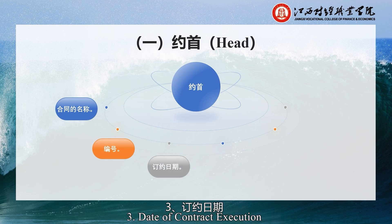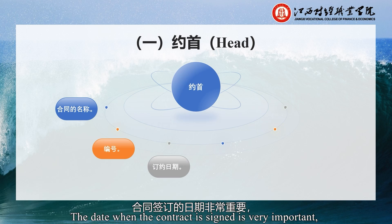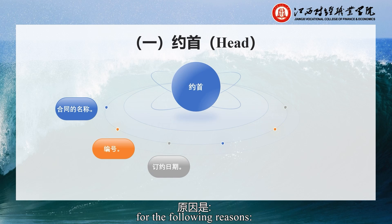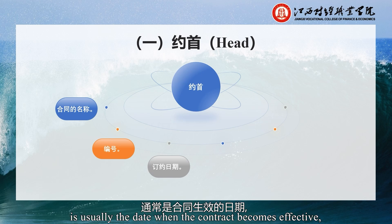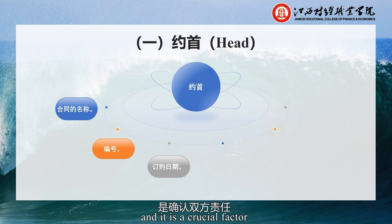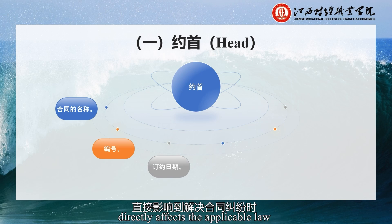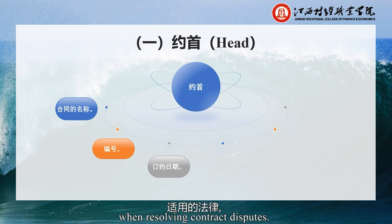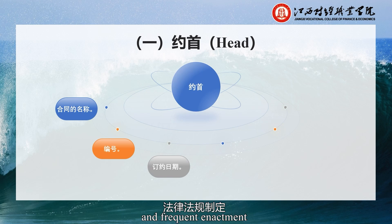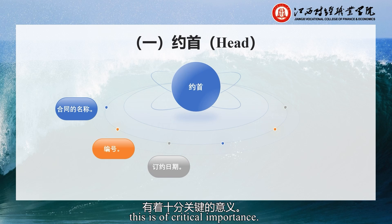Third, the Date of Contract Execution. The date when the contract is signed is very important. Firstly, the date of contract execution is usually the date when the contract becomes effective, and it is a crucial factor in determining the starting time of the responsibilities of both parties. Secondly, the date of contract execution directly affects the applicable law when resolving contract disputes — in the current era of rapid social development and frequent enactment and revision of laws and regulations, this is of crucial importance.